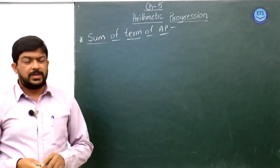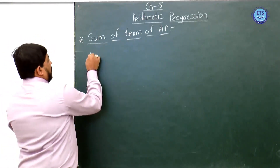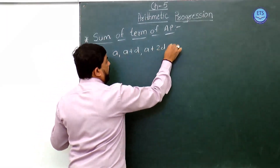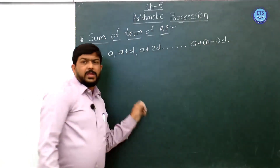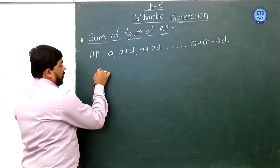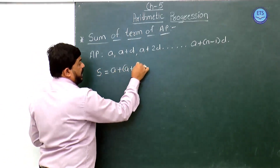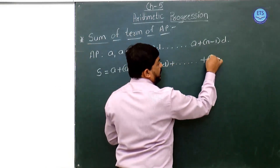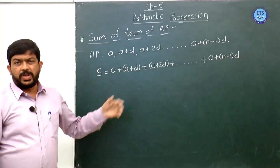Now let us find another formula — the sum of n terms of an AP. Our AP is a, a+d, a+2d, and the nth term is a+(n-1)d. If we are asked to find the sum of terms, represented by S, then S = a + (a+d) + (a+2d) + ... up to the nth term, which is a+(n-1)d.